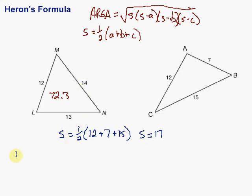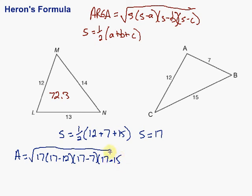I'm going to fill those things into my area formula. We have the area is equal to the square root of s, which is 17 times (17 minus 12) times (17 minus 7) times (17 minus 15). Then simplify: we have the square root of 17 times 5 times 10 times 2.